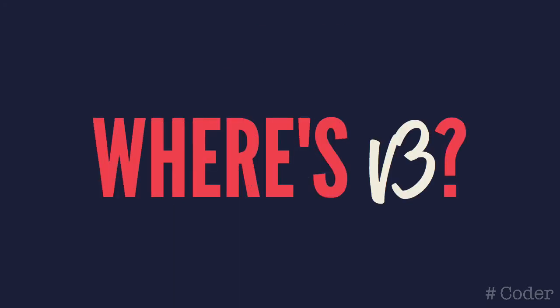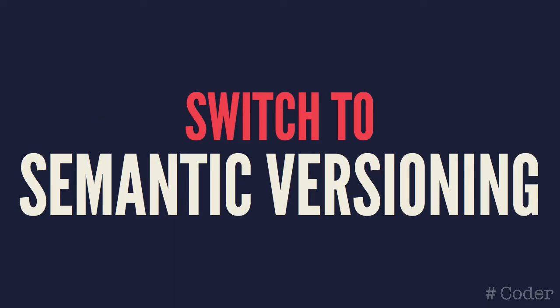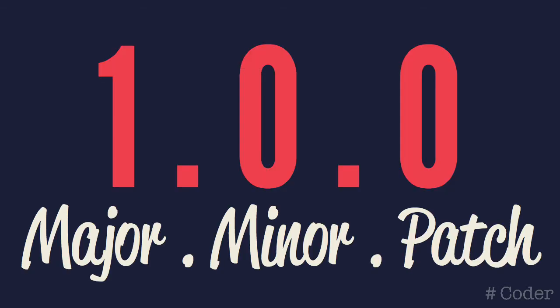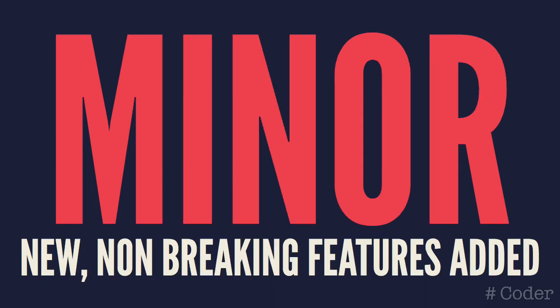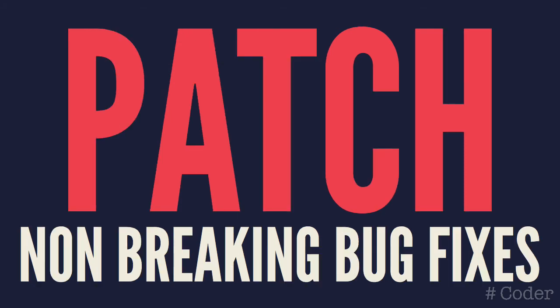So what happened to version 3? Back in September of 2016 when the first version of the new Angular framework was released, the team announced that they'll be switching to semantic versioning. As the name suggests, semantic versioning is all about adding some meaning to version numbers. A semantic version consists of three numbers: major, minor, and patch. A bump in the major version indicates there are breaking changes. A minor version bump tells us that new non-breaking features have been added, and the patch number is incremented to indicate bug fixes.